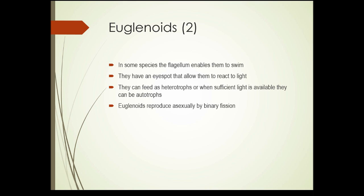Euglenoids can feed as heterotrophs, meaning they can feed on other organisms — they can eat smaller organisms like blue-green algae. But if there's sufficient light available, they can also be autotrophs, meaning they can manufacture their food from sunlight, water, and carbon dioxide. They reproduce asexually by binary fission — the cells simply split into two, and each cell grows into a new single-celled adult.